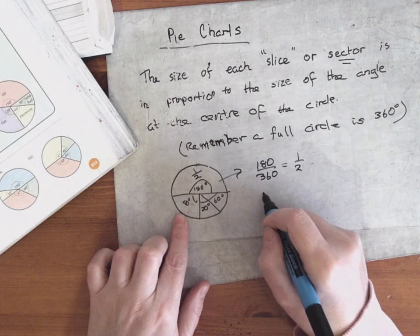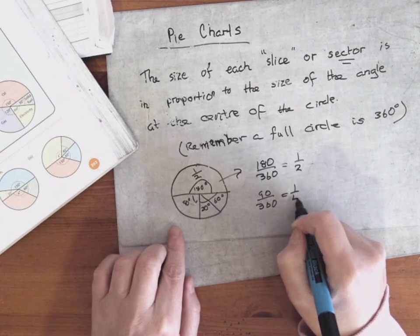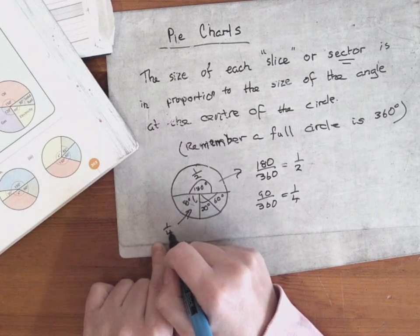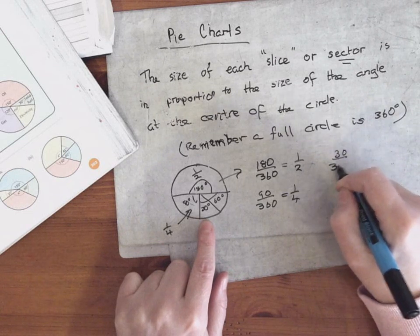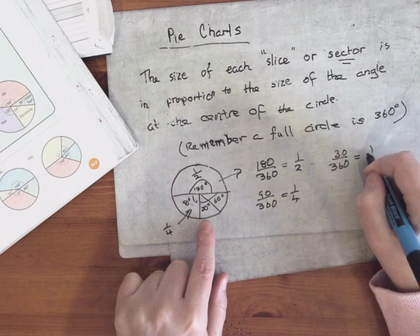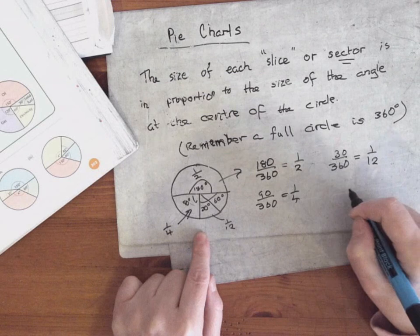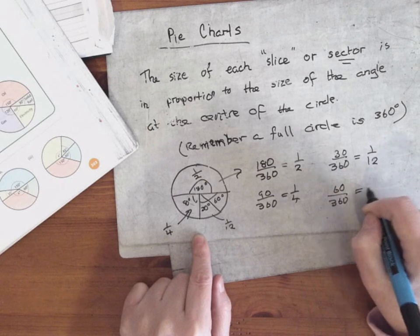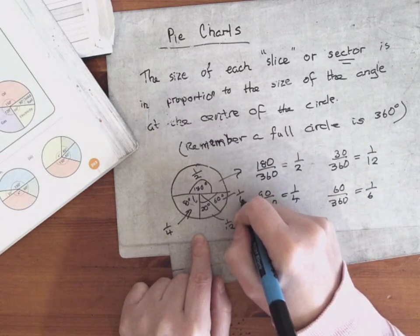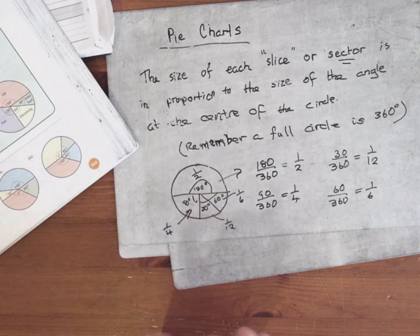This is 90 degrees. 90 out of 360 cancels down to a quarter. So that sector there is a quarter of the circle. This is 30 degrees. So 30 out of 360 cancels down to one-twelfth. So this one here is one-twelfth of the circle. And the last one is 60 degrees. 60 out of 360 is also one-sixth of the circle. So if it's half the circle, that's half the population. We'll be surveying people and representing the results on a pie chart.